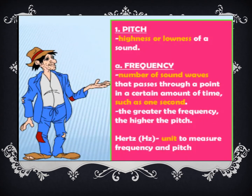Now we are going to learn about pitch and frequency. Sound is measured by counting the vibrations made in one second — this is called frequency. It tells us how fast the sound wave is vibrating. Frequency of sound is measured in a unit called hertz. High frequency produces a high sound and low frequency produces a low sound.